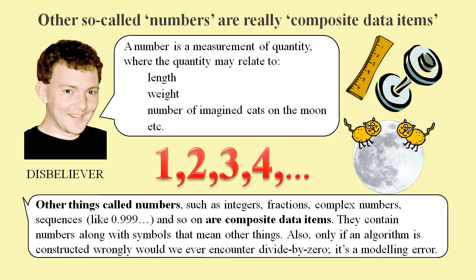Also, since algorithms should obey real-world logic, then we would only ever encounter a divide-by-zero problem if an algorithm is constructed wrongly. So if we approach the subject correctly, we should never encounter a divide-by-zero problem.